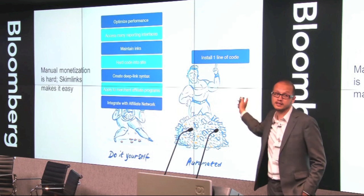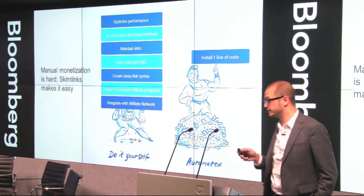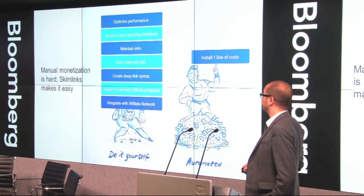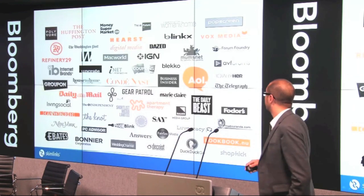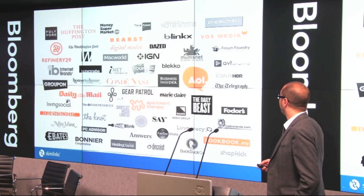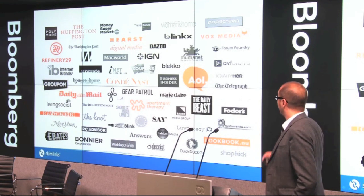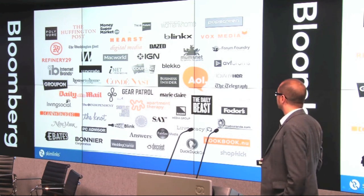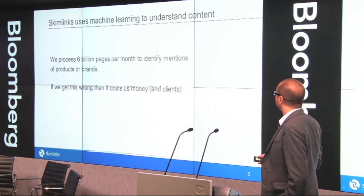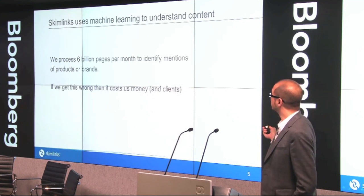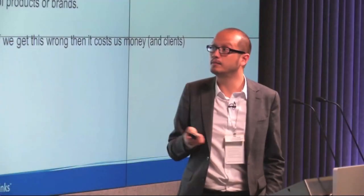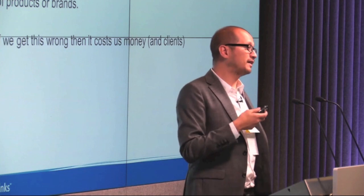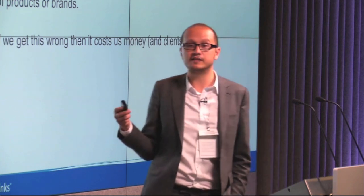We install one line of code and it makes things really easy for the publishers. We're on one and a half million publisher sites. We're helping publishers not just with monetizing their content but also understanding their content, and that's where the machine learning comes in. We process around 6 billion pages a month, and mainly we're trying to identify mentions of products or brands in the text.